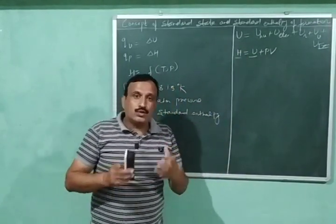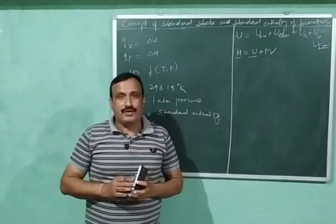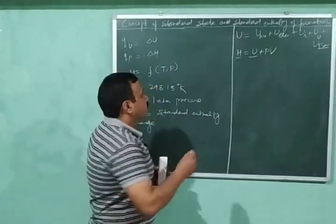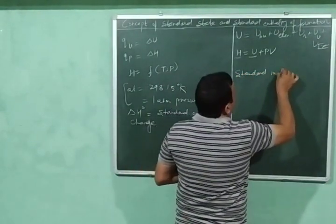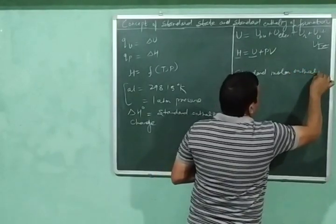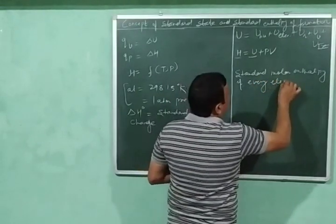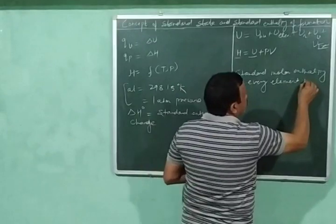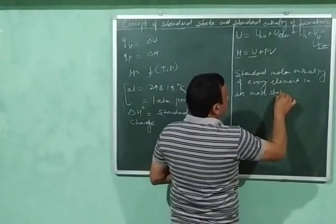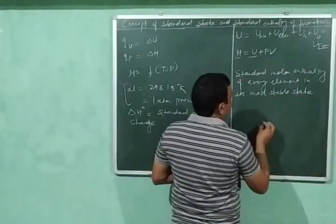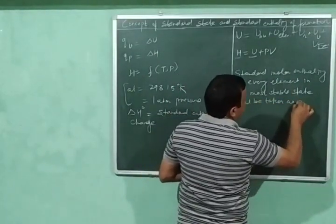To calculate the standard molar enthalpy of a substance, we follow a convention: the standard molar enthalpy of every element in its most stable state is taken as zero.